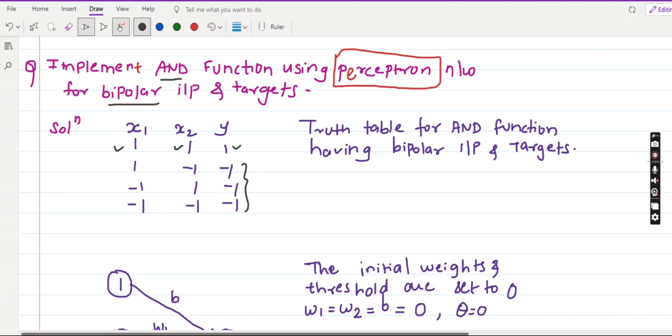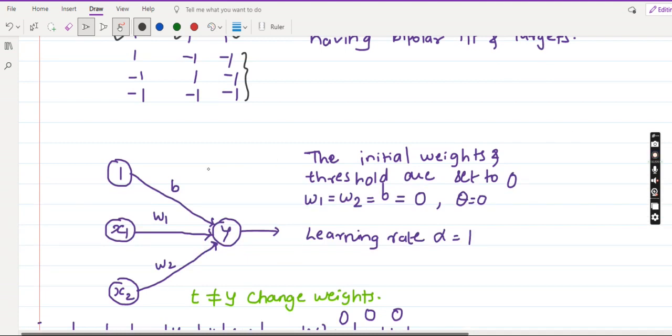So let us look at the structure first. I have two input neurons because any AND gate has two inputs and one output. So this is my AND gate x1, x2 and this is my y. 1 is the bias value b, w1, w2 are the weights.